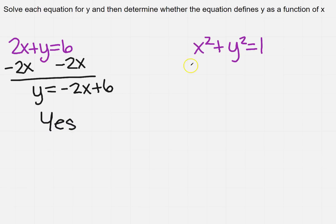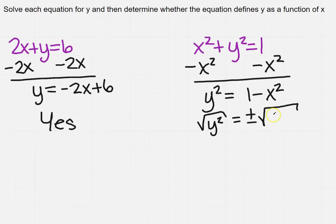Now, what about over here? Well, if I want to get y by itself, I'm going to have to subtract x squared. So I'm going to get y squared equals 1 minus x squared. And I take the square root of both sides. Remember, when you take the square root, you take the plus and the minus. So then y equals plus or minus the square root of 1 minus x squared.